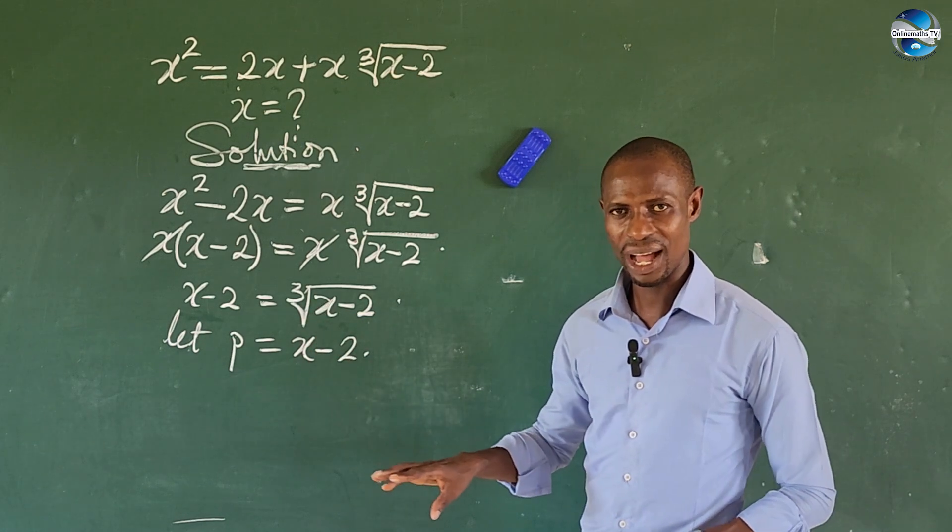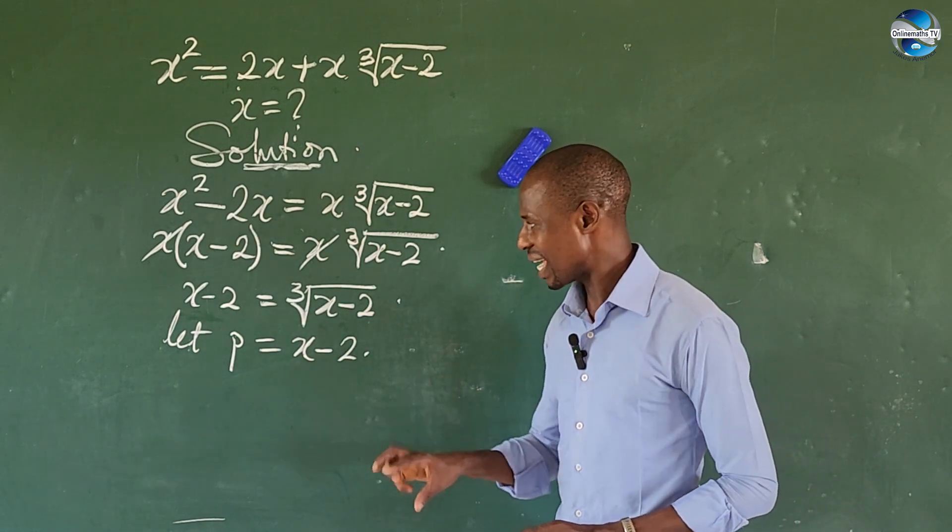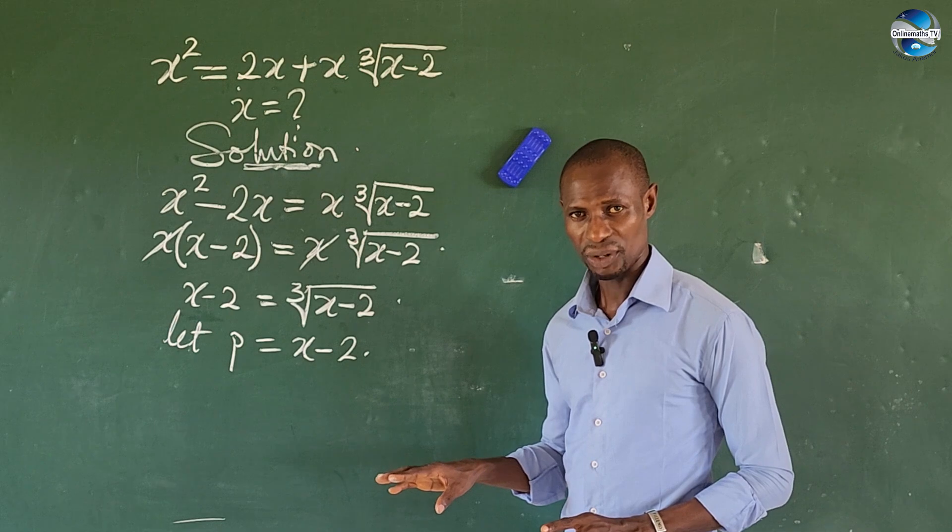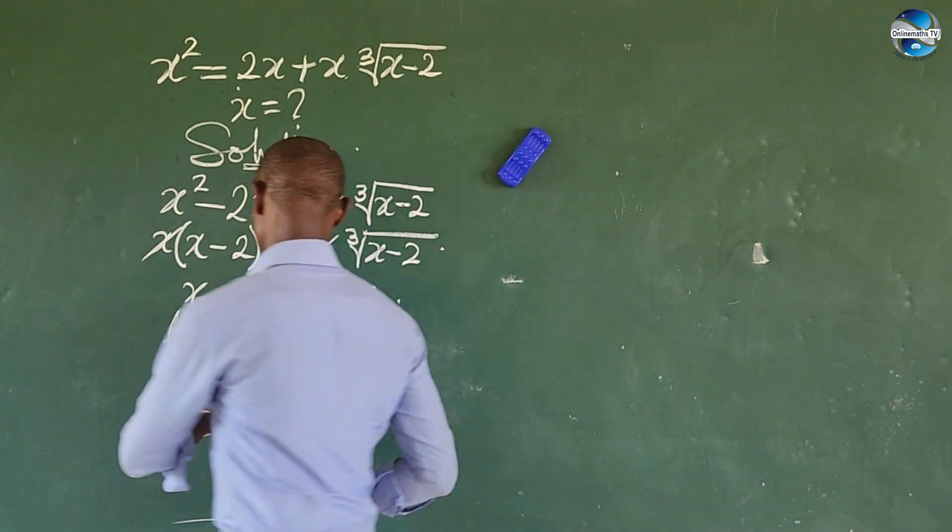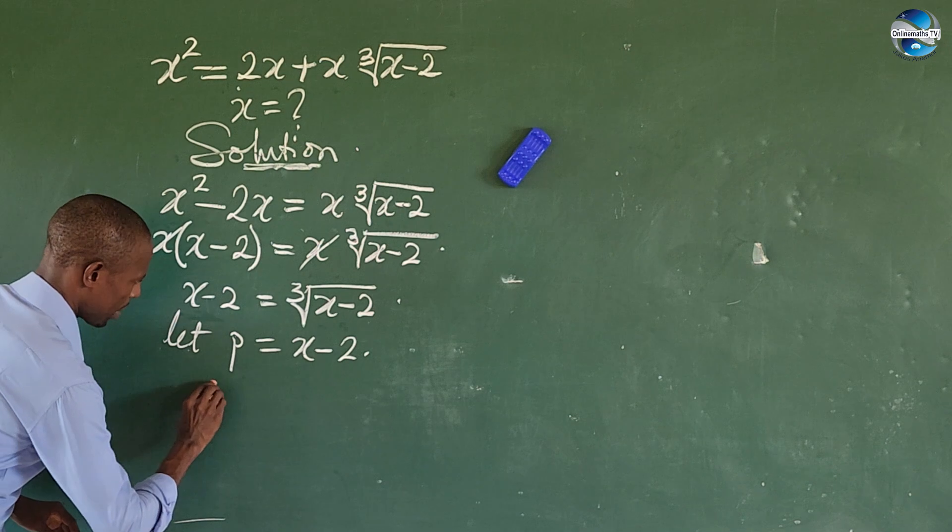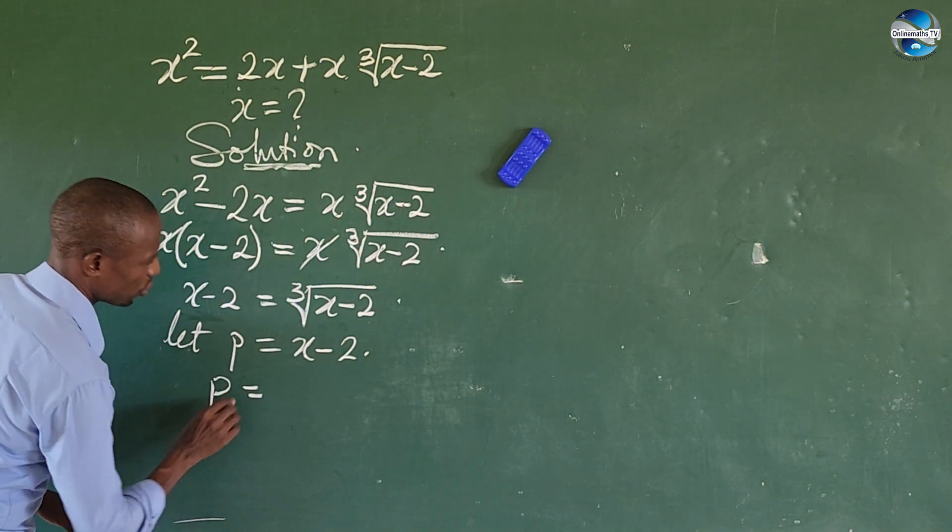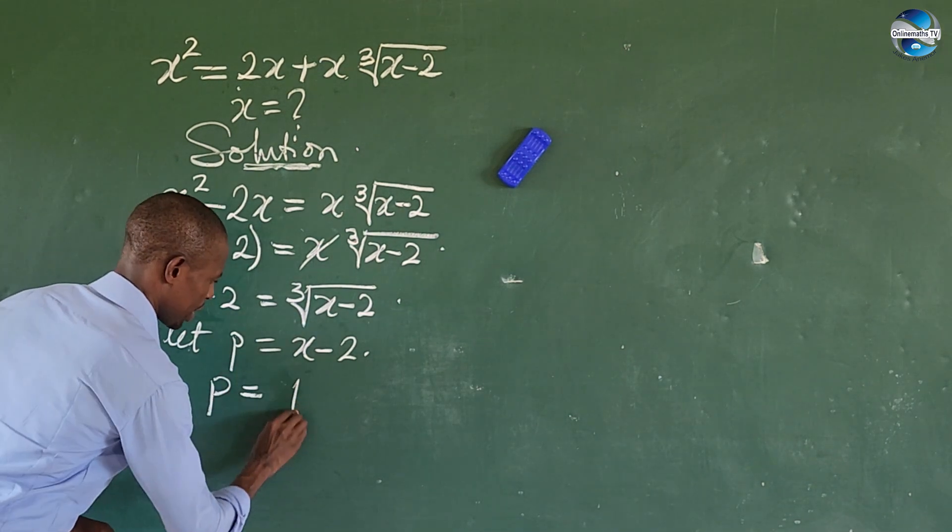If we do that, we're going to have a polynomial of third degree, but this I believe is quicker. From here, we can rewrite this as p equals the cube root of p.